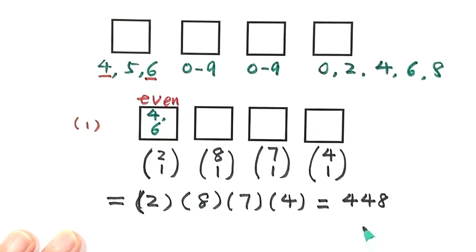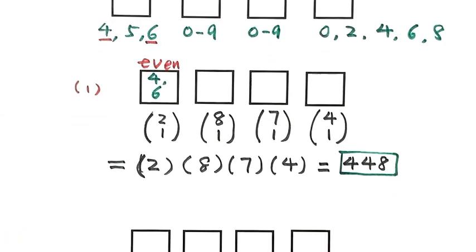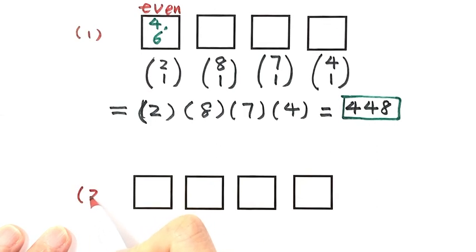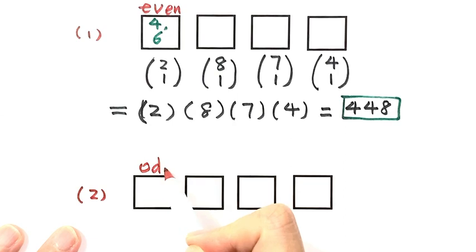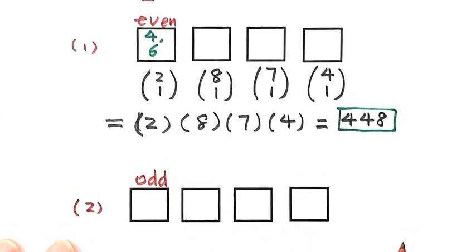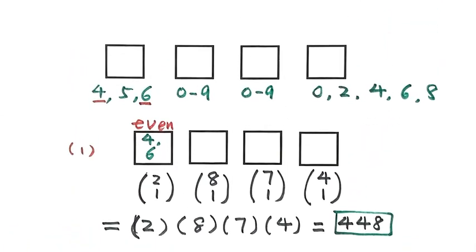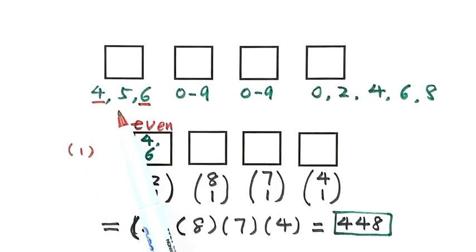That's the first case. There are 448 possibilities satisfying the condition in this case. Now let's see the second case, when the thousandth digit is odd. That means we have only one possibility, which is 5.